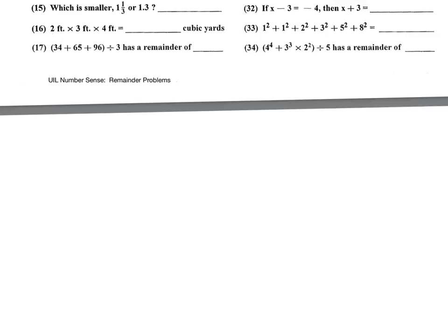Okay, today we're going to do a couple of remainder-type problems that are common on UIL number sense. Number 17 is one of them, and also number 34, another remainder problem within the same test. 34 plus 65 plus 96 divided by 3 has remainder of blank.